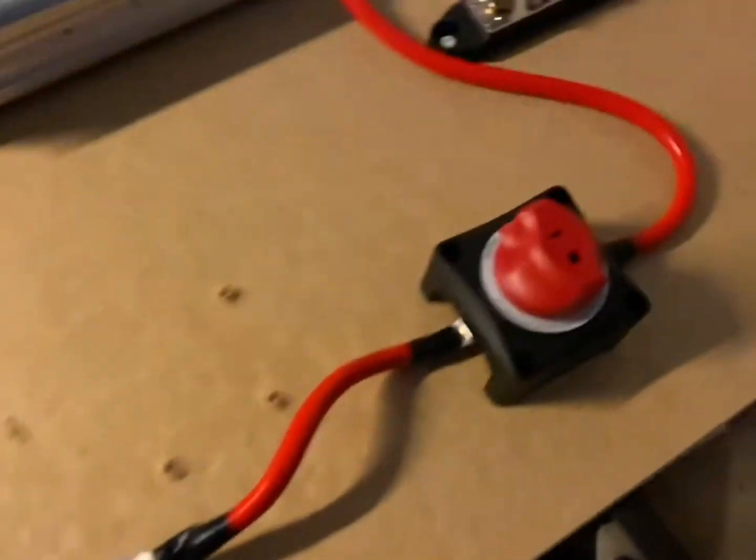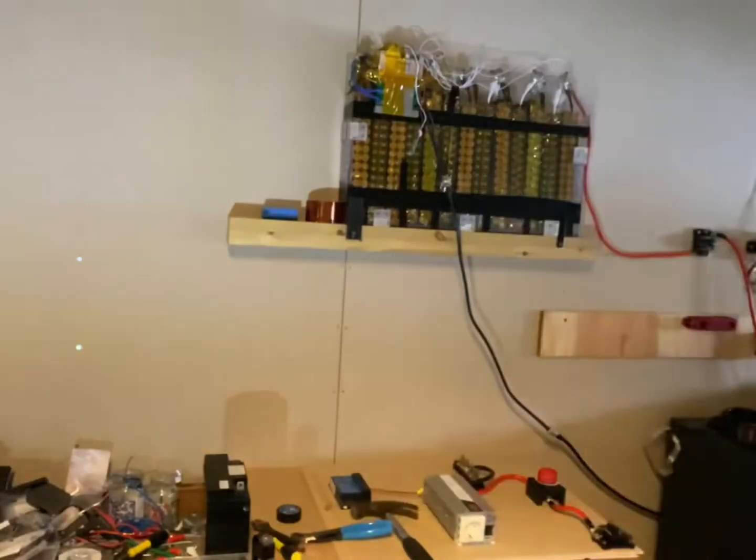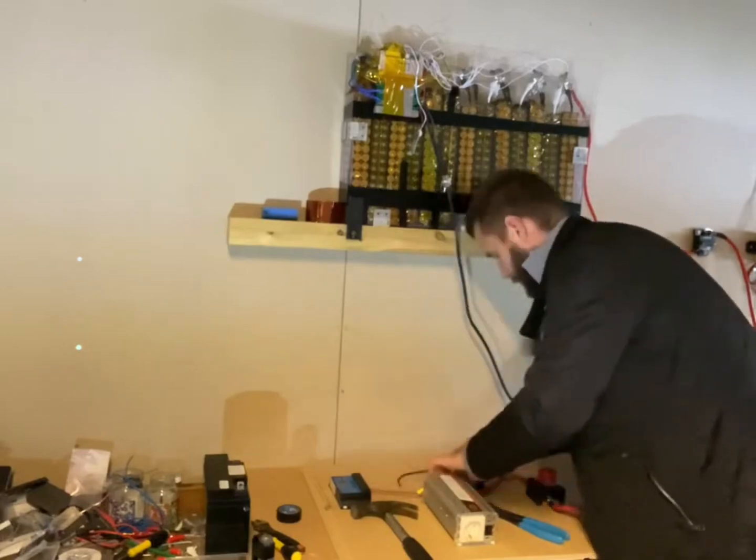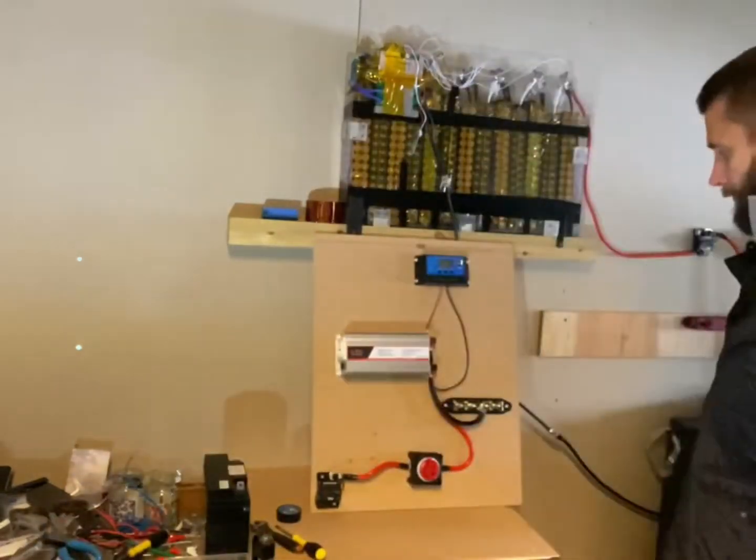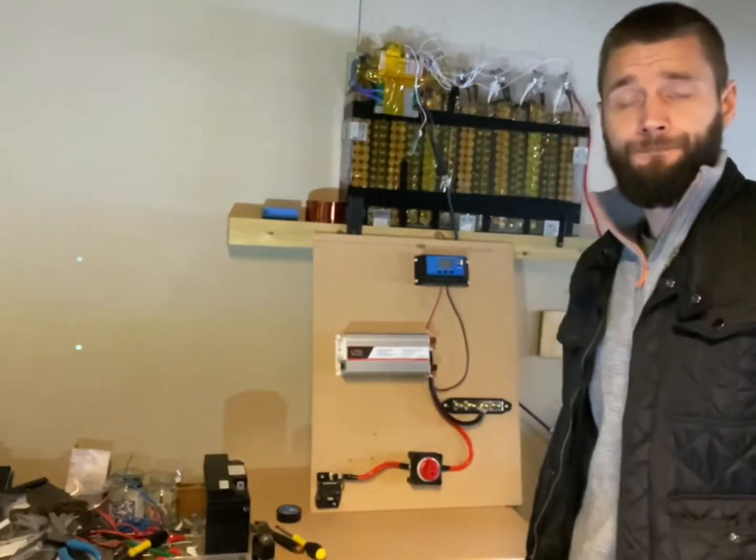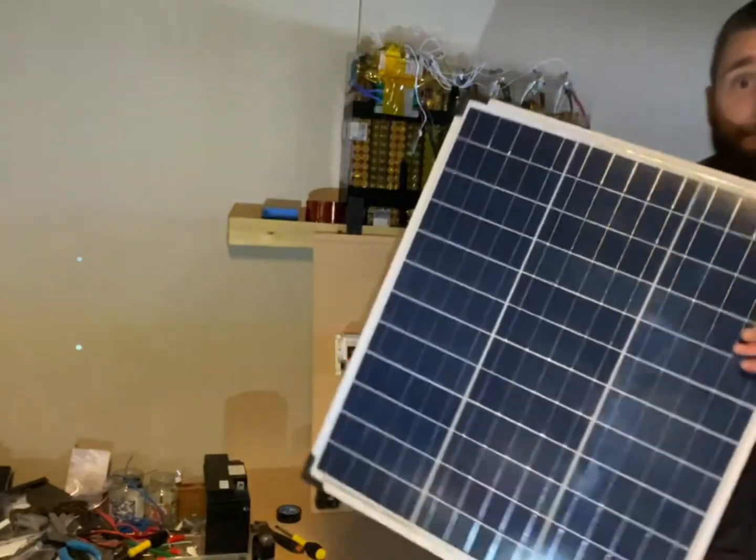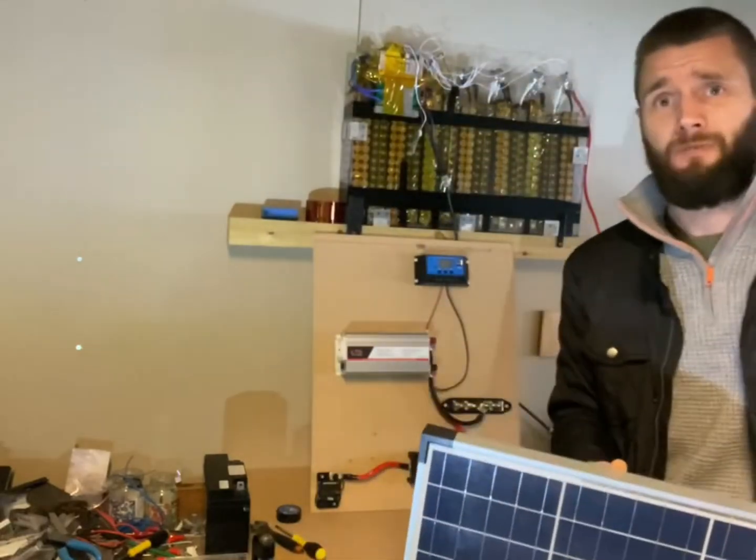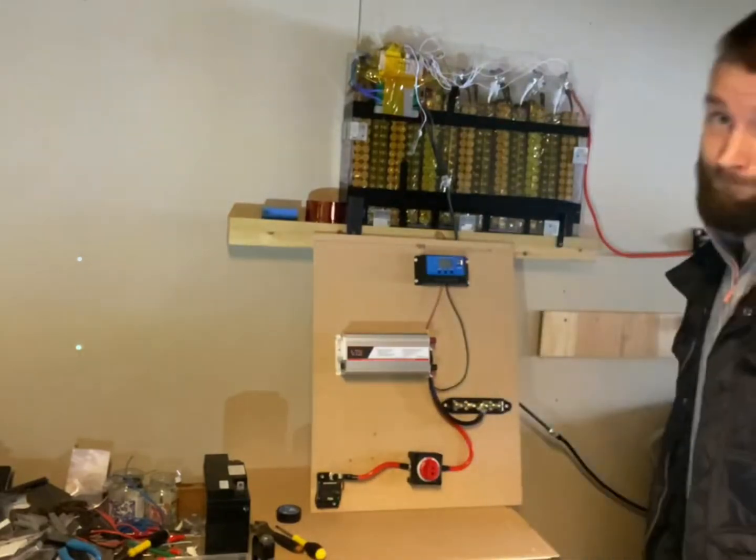There you go, that's my positive line right there. Breaker, switch, inverter, charge controller. Now let's do the negative. There we go, solar panel. Of course you can make it as big as you want according to the charge controller.